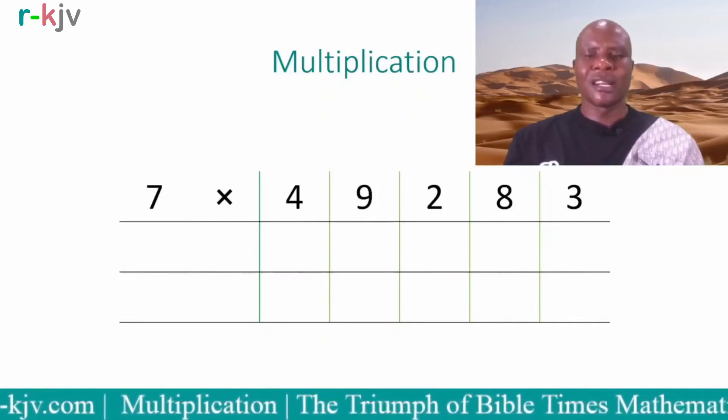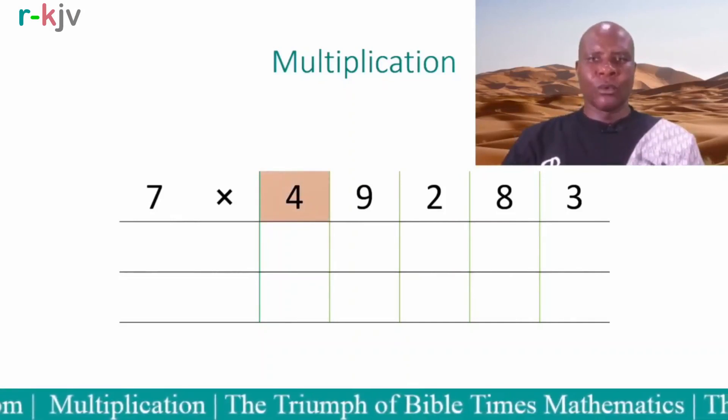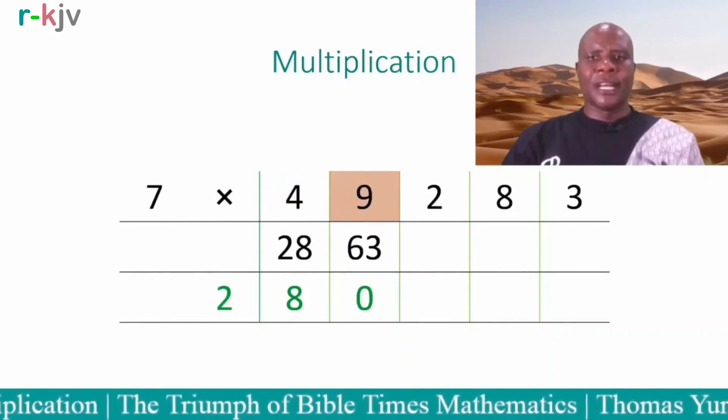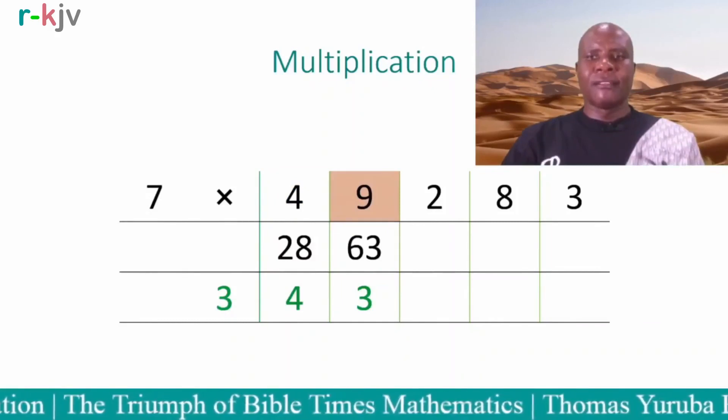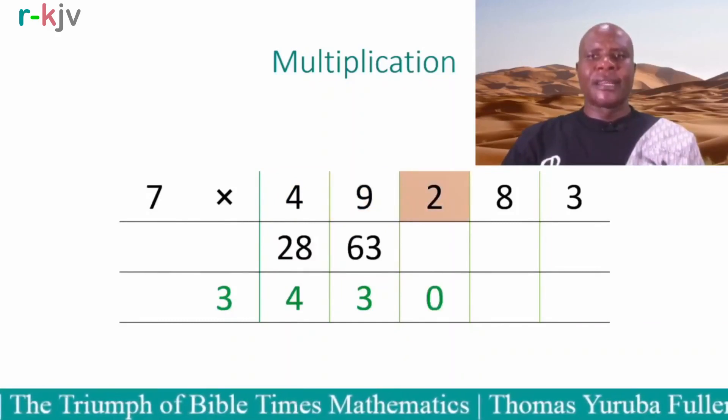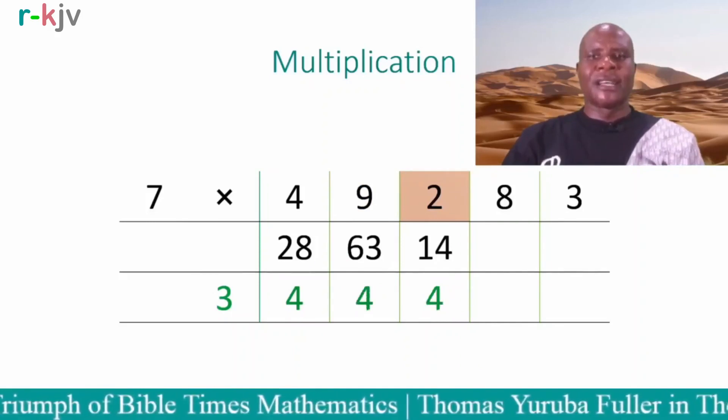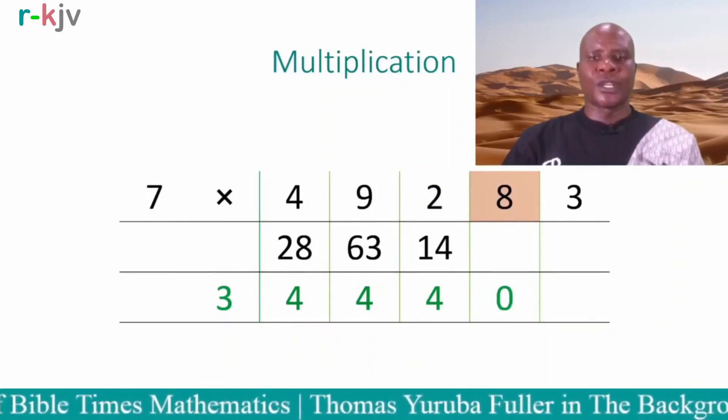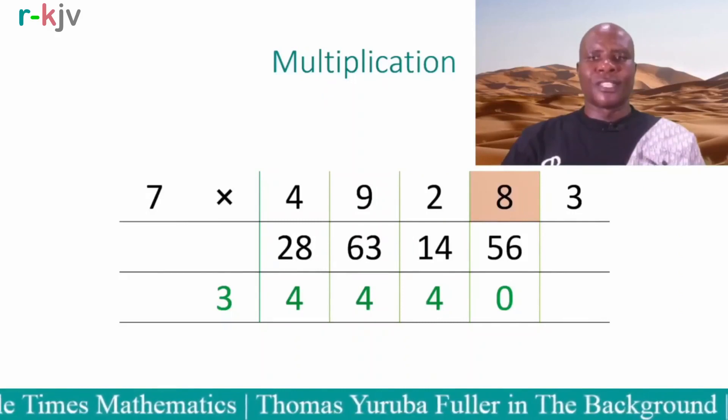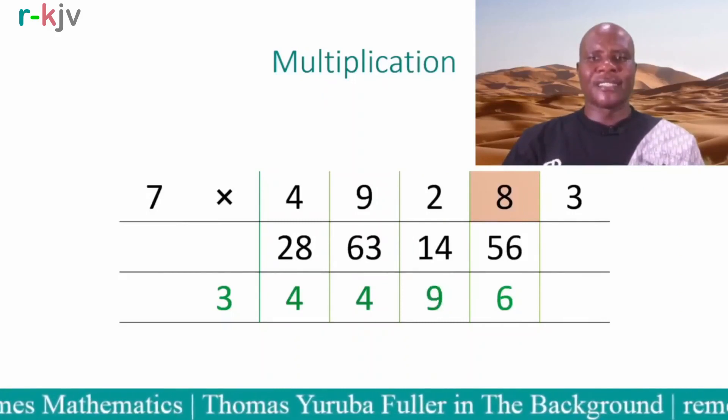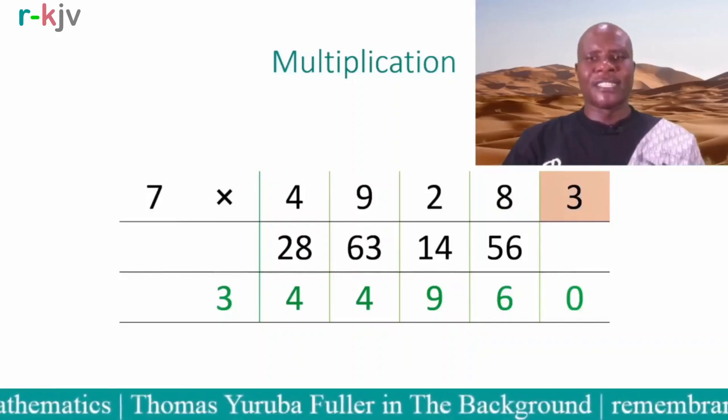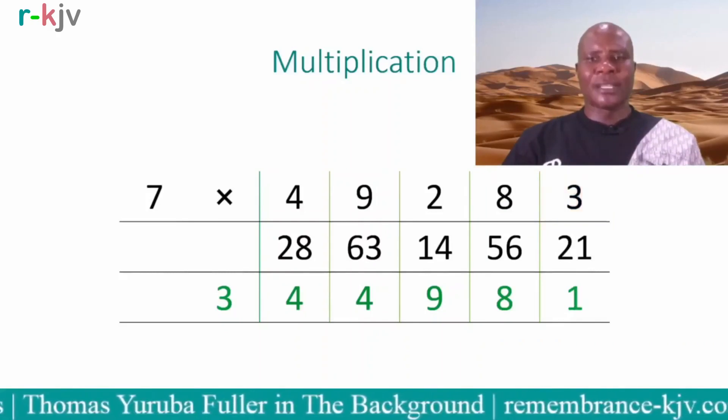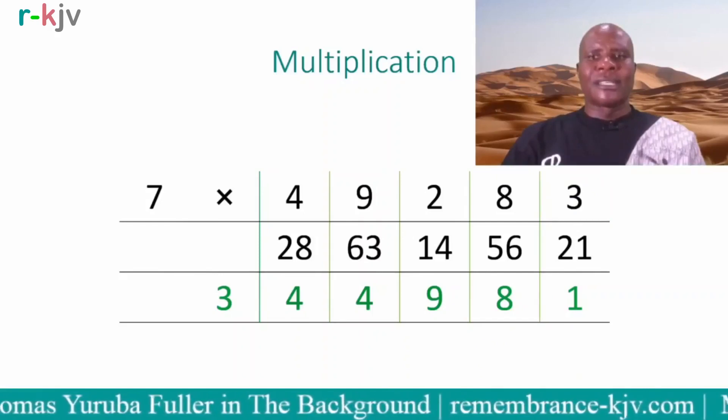So it's 7 by 4, 28, shift 28 plus 63, 343, shift 34, 30 plus 14, 3444, shift 34440 plus 56, 34496, shift 3449, 60 plus 21, 344981. Therefore, 7 multiplied by 49,283 is 344981.